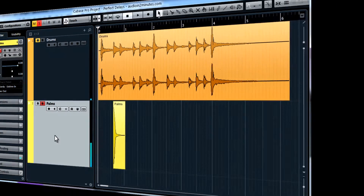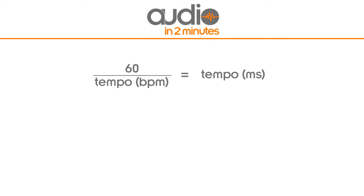Now let's do the math. This is the formula we need to know: take the 60 seconds you have in a minute and divide them by the tempo or beats per minute, and the result will be a time in seconds which you'll need to translate to milliseconds.